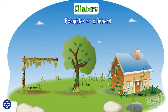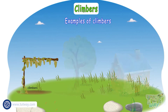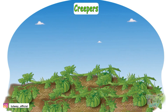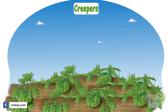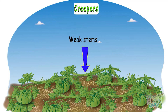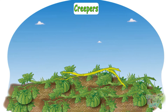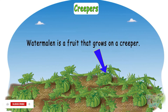These are examples of climbers. Now let's see what are creepers. Plants that grow along the ground are called creepers. They too have weak stems. Watermelon is a fruit that is grown on a creeper.